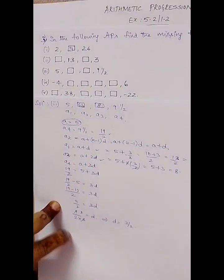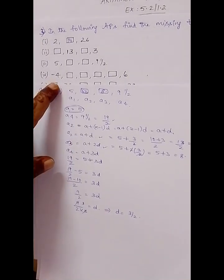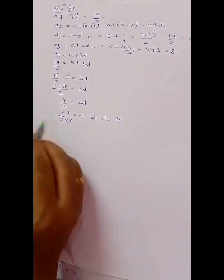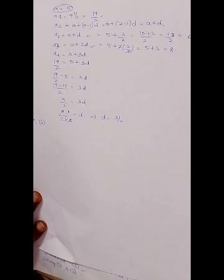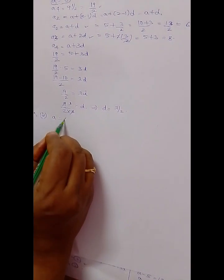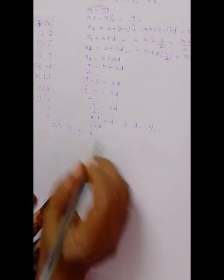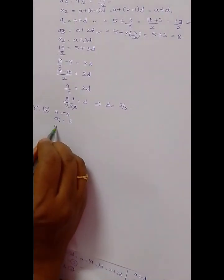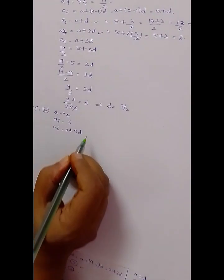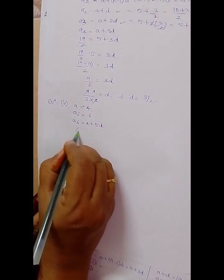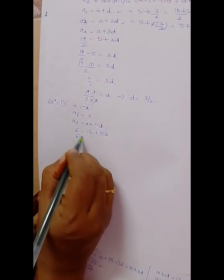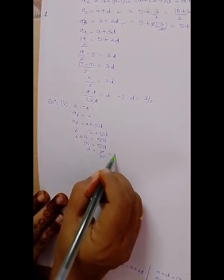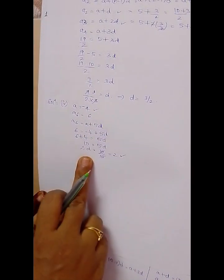The fourth problem: -4, _, _, _, _, 6. We have to find a2, a3, a4, a5. a = -4 and a6 = 6. a6 = a + 5d, so 6 = -4 + 5d. Therefore 6 + 4 = 5d, 10 = 5d, and d = 10/5 = 2. The common difference is 2.